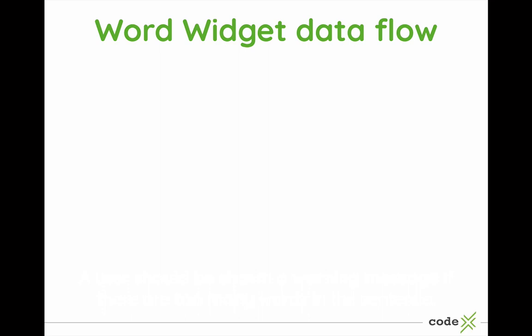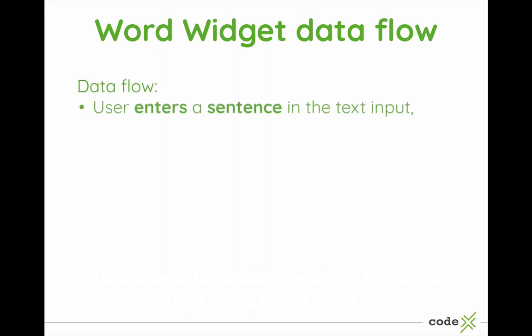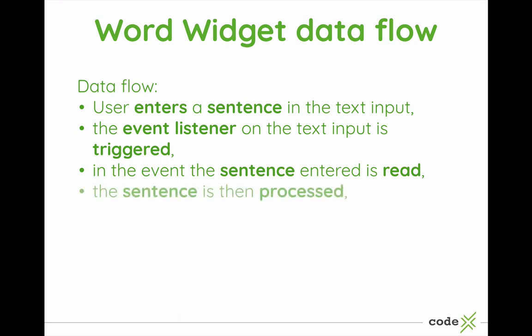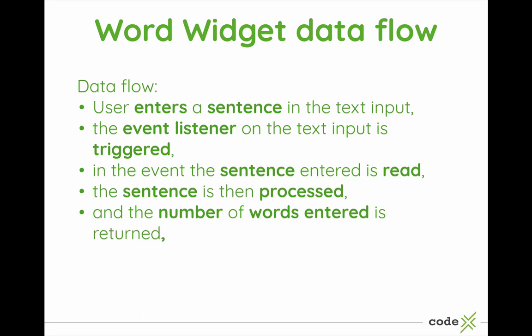Let's look at the data flow of this Words Widget. First, the user will need to enter a sentence in the text box, and then there will be an event triggered on the text box. In the event that's fired, the sentence will be read. The sentence is then processed, the number of words is returned from the function that was processing the input, and then ultimately the output needs to be displayed on the screen.